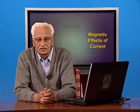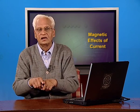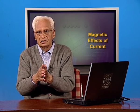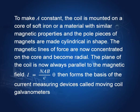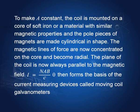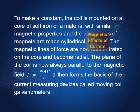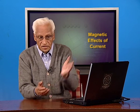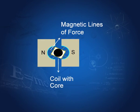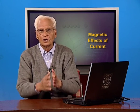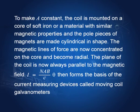How do we make A constant? We must ensure that the coil always has the same effective area perpendicular to the magnetic field. We embed an iron core in the coil. These ferromagnetic materials attract the magnetic field lines, concentrating them in the core so that the plane of the coil is always perpendicular to the magnetic field and the torque is constant. Therefore, this formula I equal to (N A B / C) theta gives us I proportional to theta.